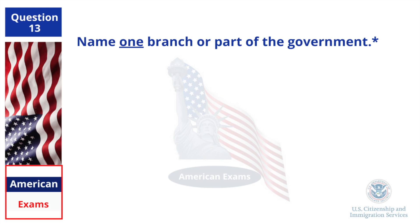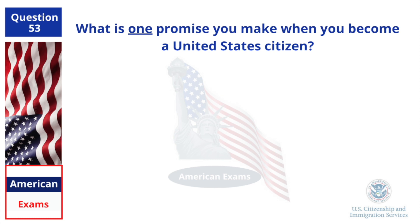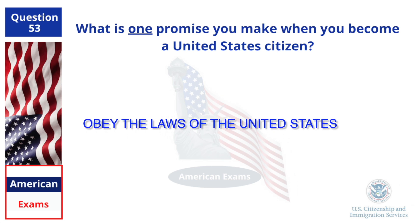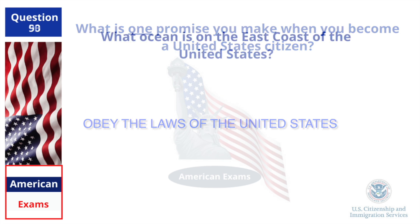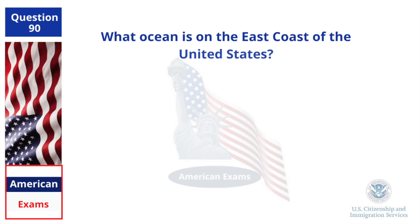Name one branch or part of the government. What is one promise you make when you become a United States citizen? Obey the laws of the United States. What ocean is on the east coast of the United States? Atlantic Ocean.